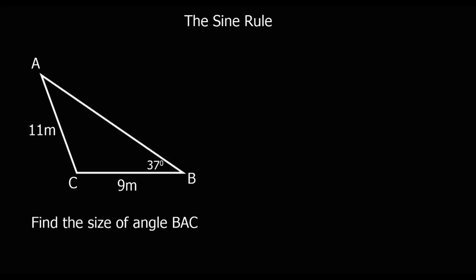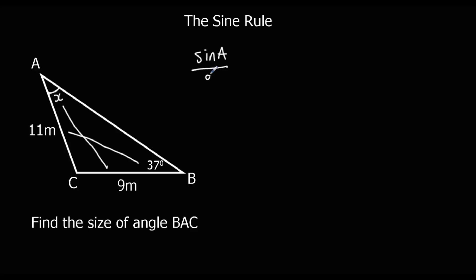This time we're looking at an angle. The angle BAC is x. We're working out an angle, but let's check first — we've got opposites: x is opposite 9, and 37 is opposite 11, so we can use the sine rule. We're going to use the sine rule for angles this time, so sine A over little a equals sine B over little b.